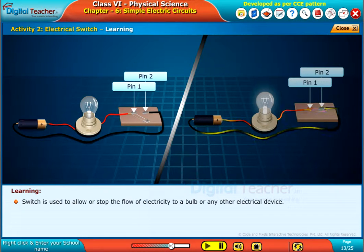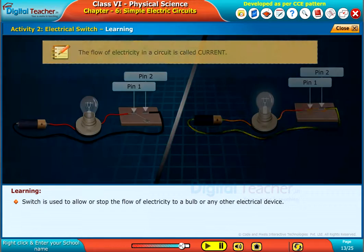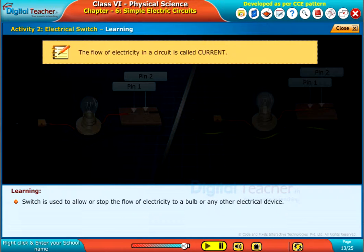A switch is used to allow or stop the flow of electricity to a bulb or any other electrical device. Note, the flow of electricity in a circuit is called current.